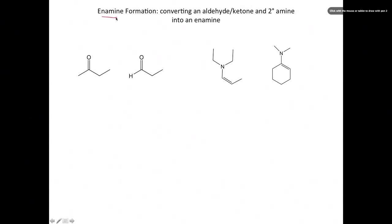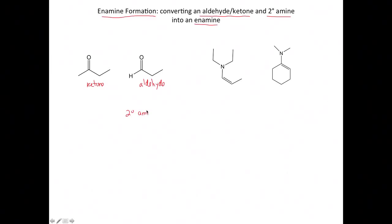In this video we're going to talk about the reaction and mechanism of forming an enamine. We're going to be converting an aldehyde or a ketone using a secondary amine into what we call an enamine. The key functional groups here are a ketone or an aldehyde, and either of these species are going to react with a secondary amine. When we combine these two, done under acid catalyst, we're going to form a new functional group called an enamine.